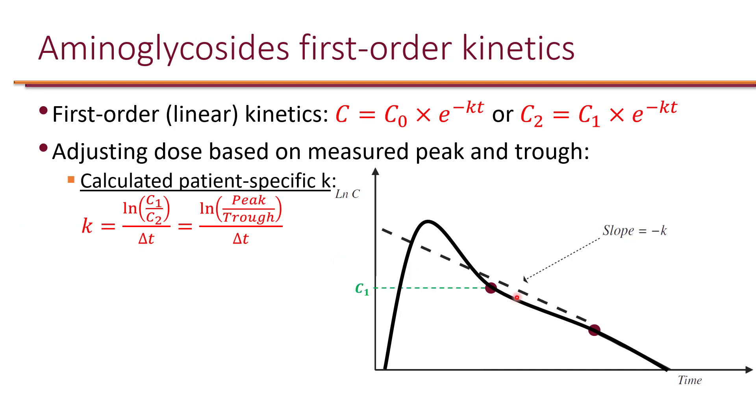Imagine that your first level is here after the distribution phase, and we're going to get that level at time 1. Then you get the second concentration later during that same dosing interval at time 2. The time that it takes between the two concentrations would be the delta T, or in other words, T2 minus T1 would be delta T, and that is the T that goes into this equation.